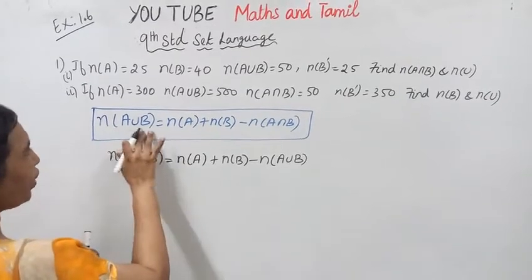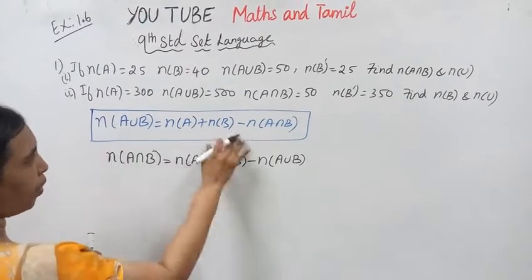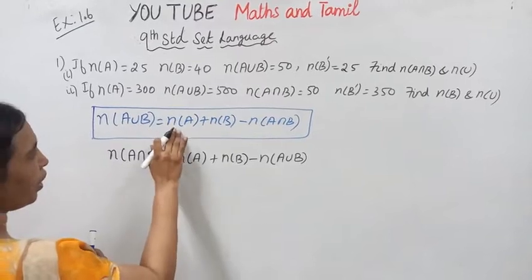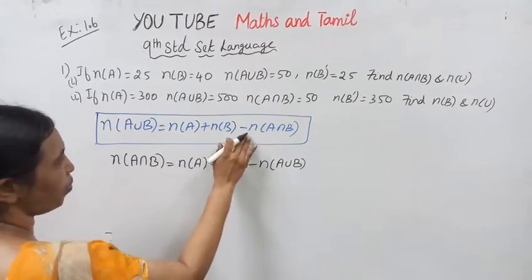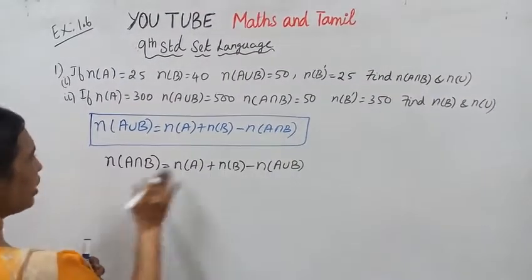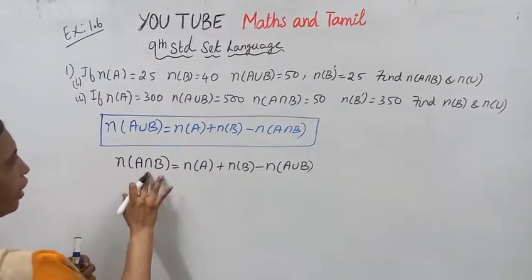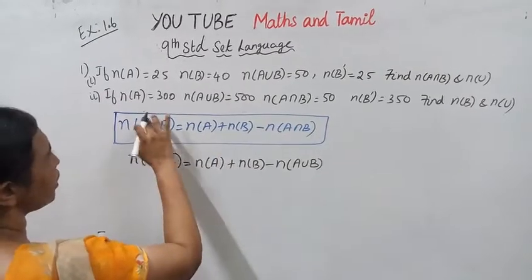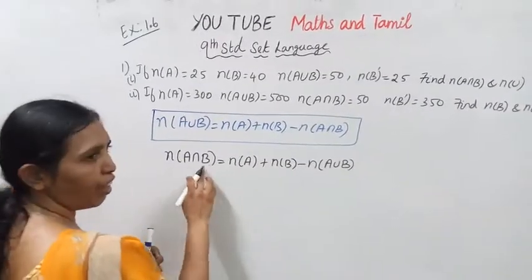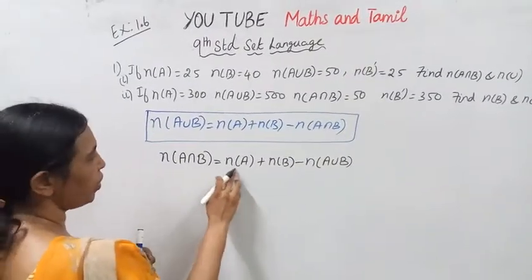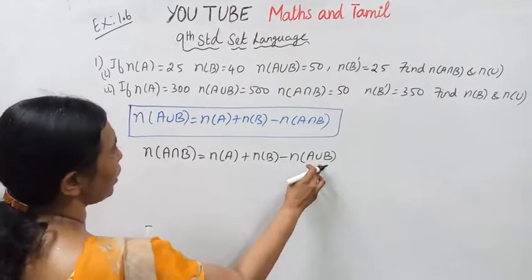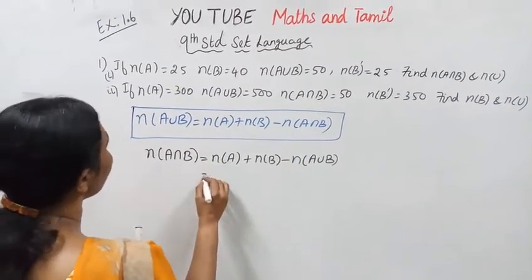This is the most important formula. N of A union B equal to N of A plus N of B minus N of A intersection B. Therefore, N of A intersection B equal to N of A plus N of B minus N of A union B.